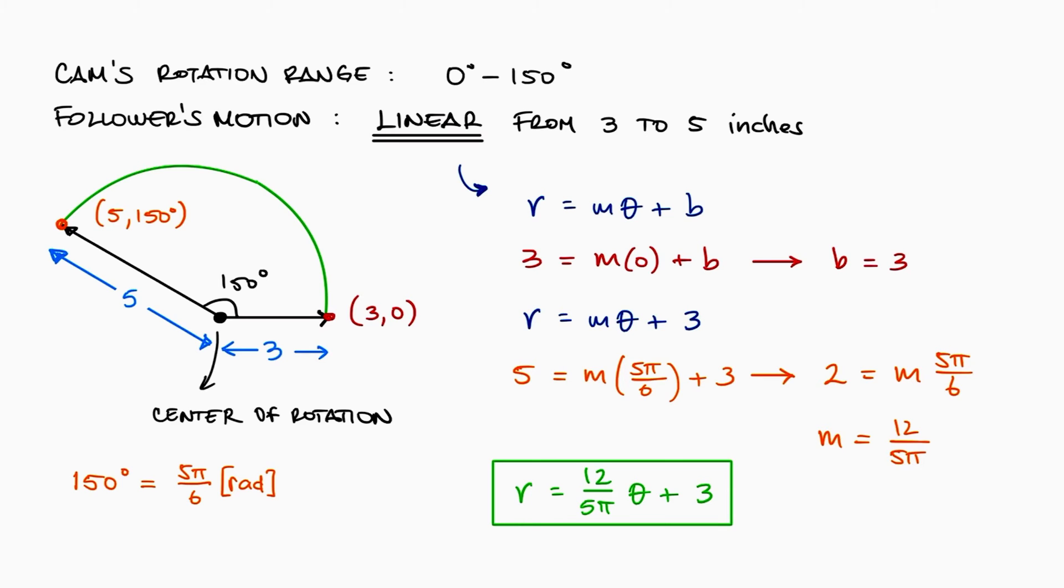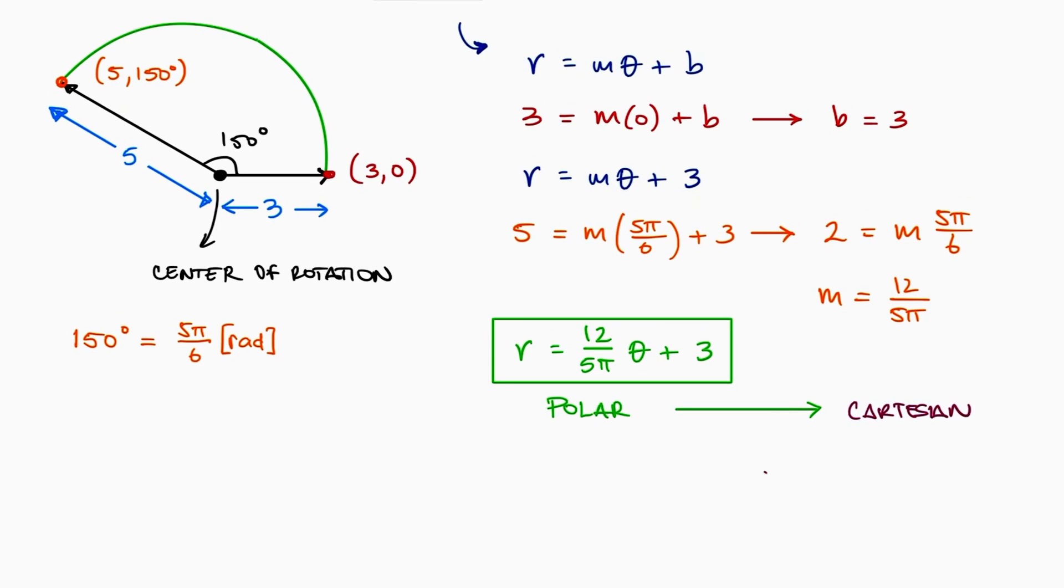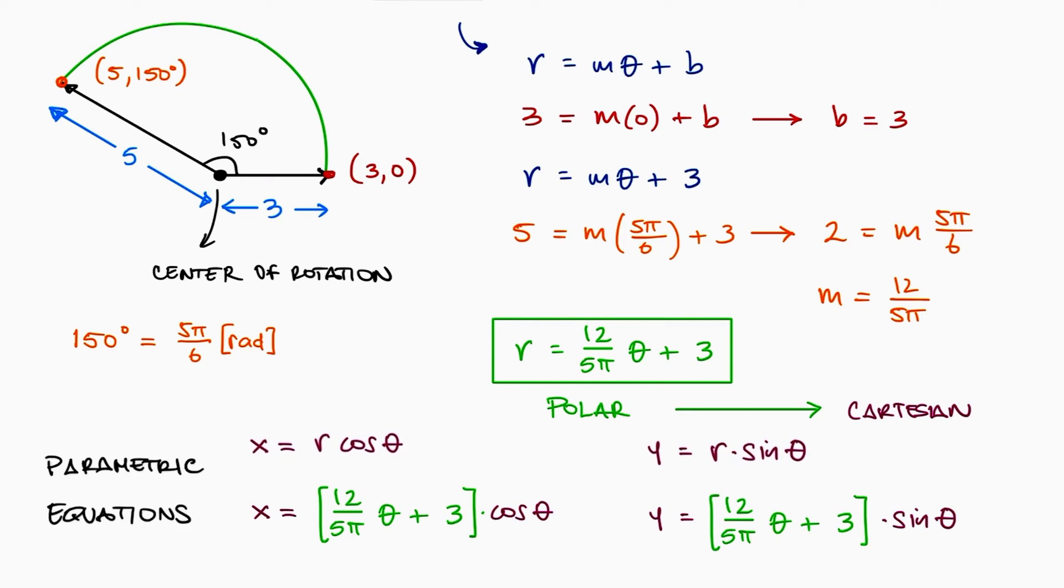Now recalling what we just reviewed, that to go from polar to Cartesian's x is always r·cosine of theta, and y is always r·sine of theta, we can substitute the r equation we just found to get our parametric equations for this part.